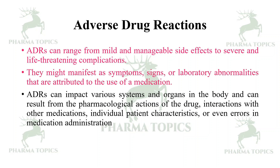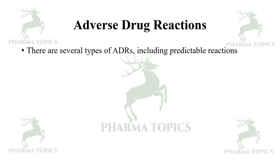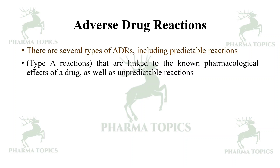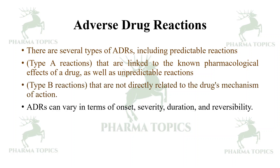ADRs might manifest as symptoms, signs, or laboratory abnormalities attributed to the use of the medication. They can impact various systems and organs in the body, and can result from pharmacological actions of the drug, interactions with other medications, individual patient characteristics, or errors in medication administration. There are several types of ADRs, including predictable Type A reactions linked to pharmacological effects, and unpredictable Type B reactions not directly related to the drug's mechanism of action. ADRs can vary in terms of onset, severity, duration, and reversibility.